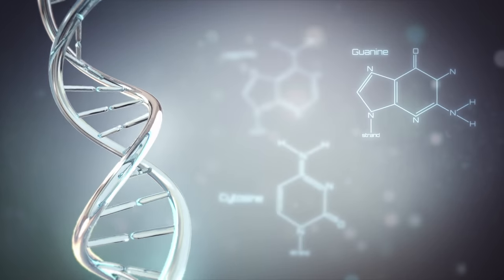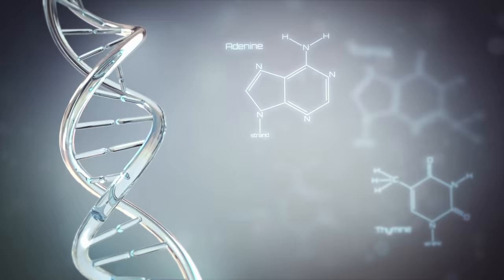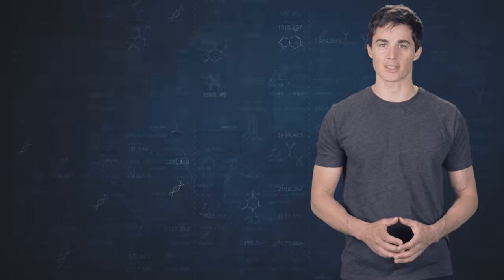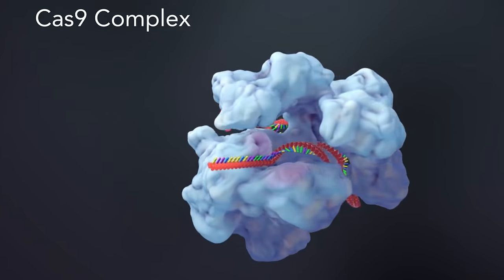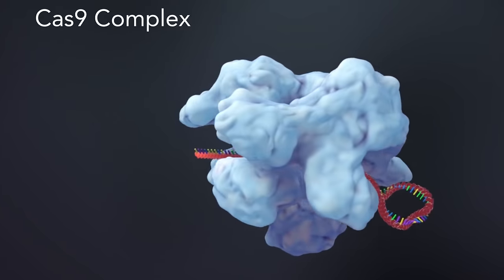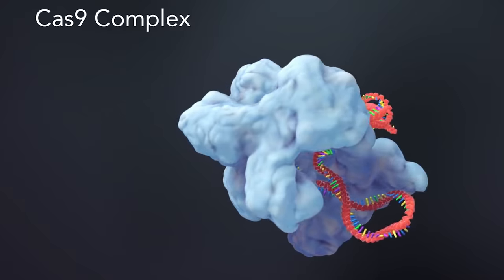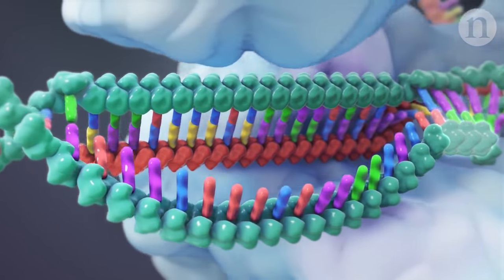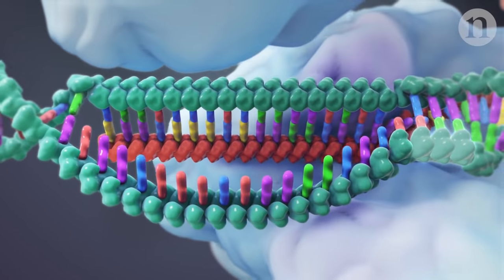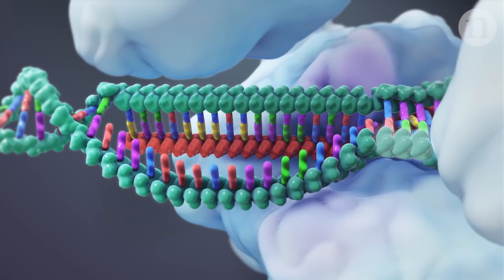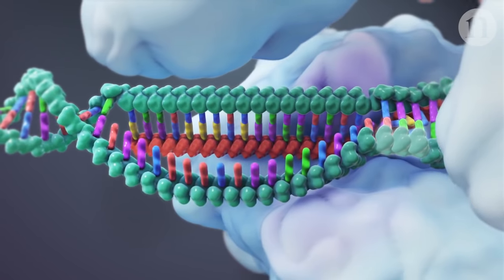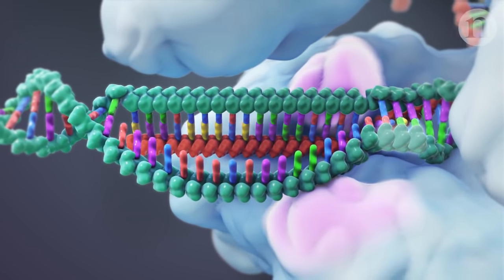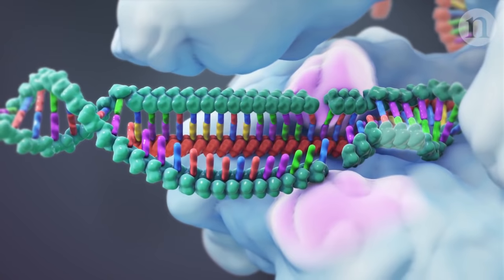The eureka moment that earned the two scientists the 2020 Nobel Prize came when they realized that they could put any guide RNA sequence in the Cas9 protein, not only the RNA of a virus, meaning that they now had the ability to go and cut any gene at any point in the long DNA molecule of the organism, with incredible precision and ease.